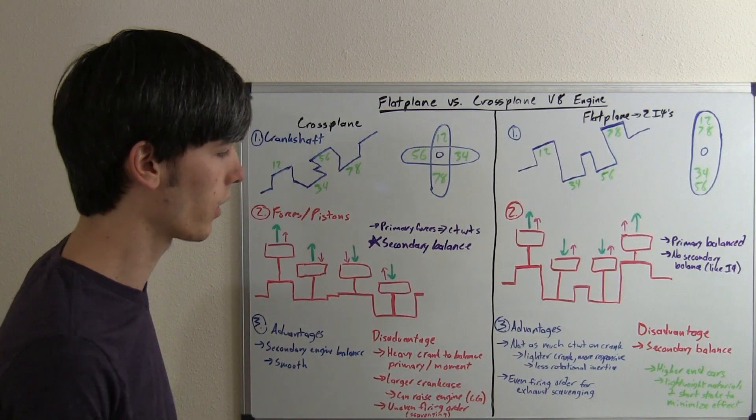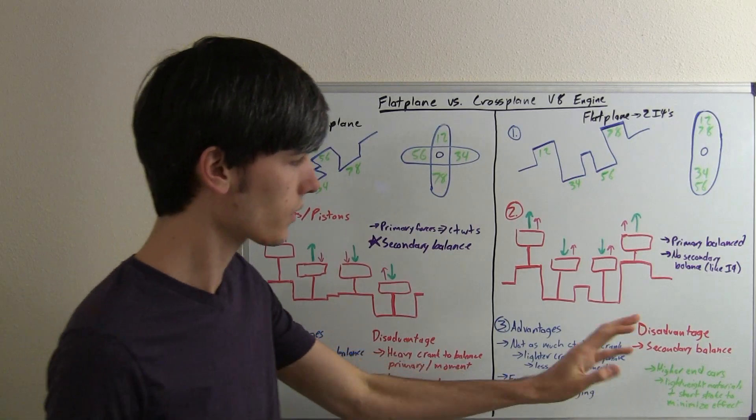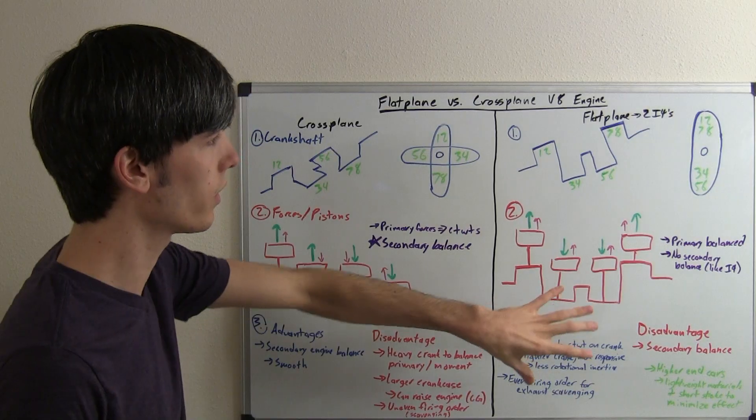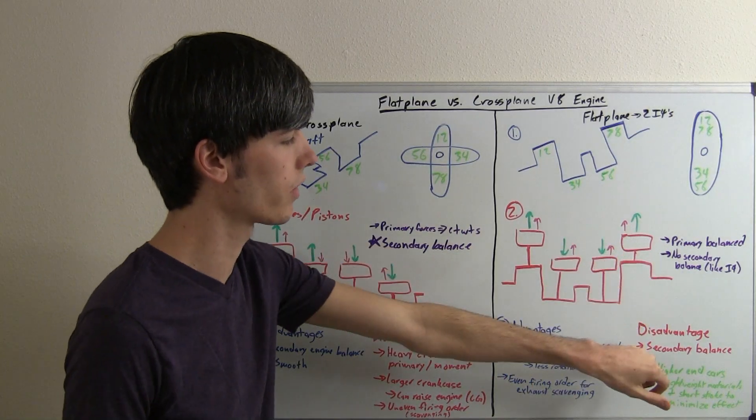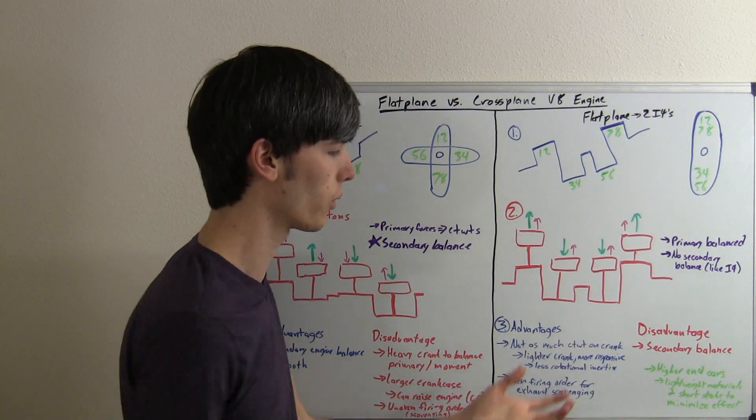Also, the exhaust scavenging, because the exhaust pulses are going to alter from bank to bank. Disadvantages. As we've mentioned, the secondary imbalance. So the reason flat-planes aren't as common is because of this secondary imbalance, and so the reason they are used though is for racing,